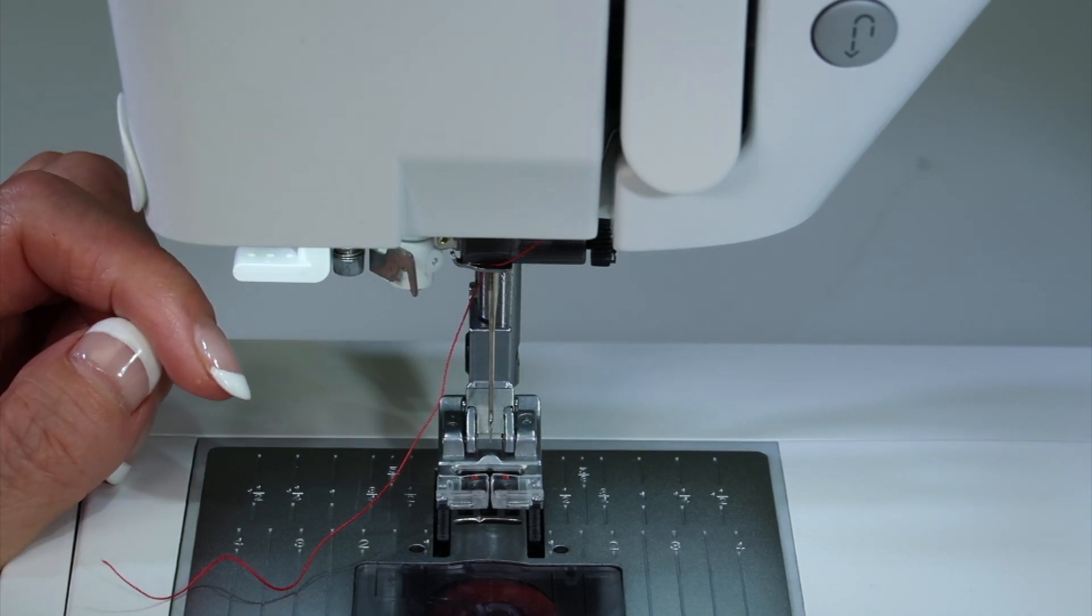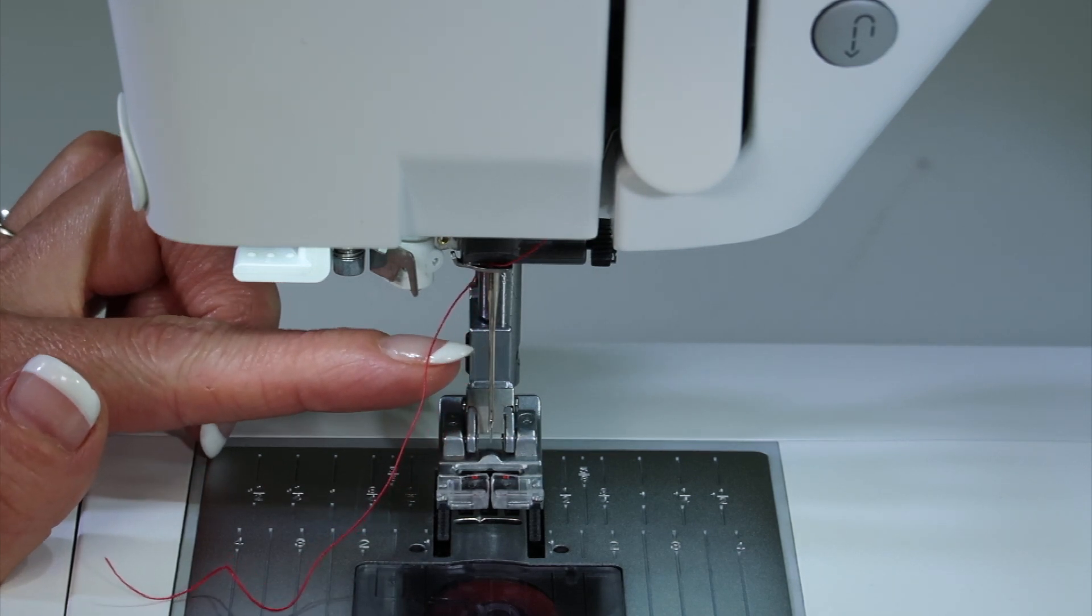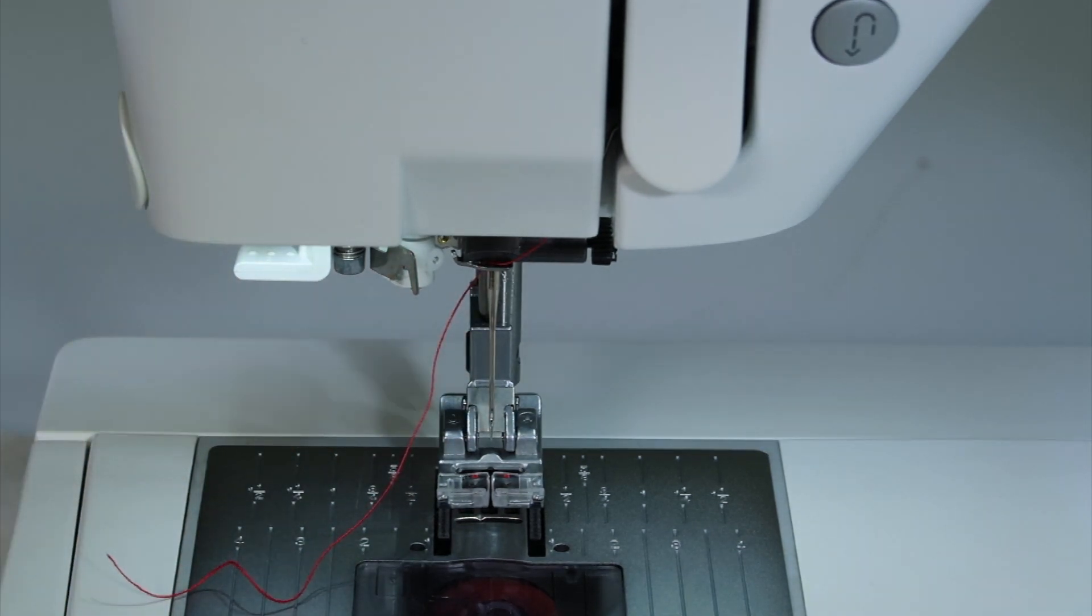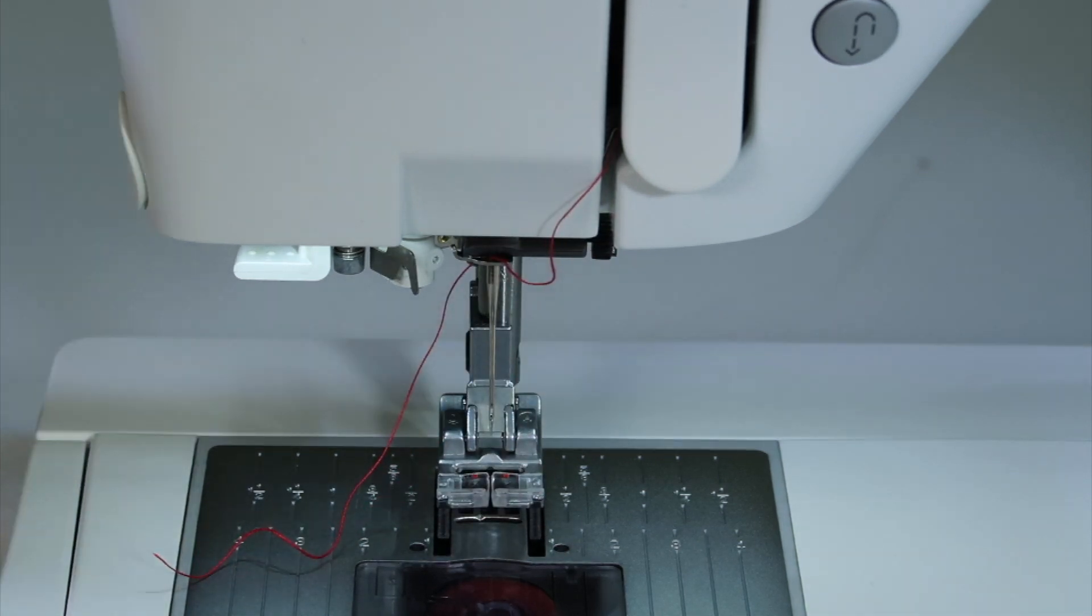Now here are a couple tips to always make your needle threader work. Number one, make sure your needle's at the highest position and not by just turning your hand wheel, but by using the needle up, needle down button and actually let that needle come to the highest point.